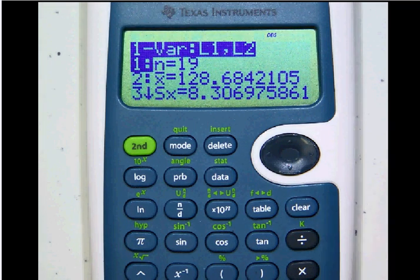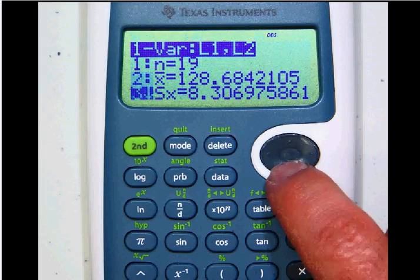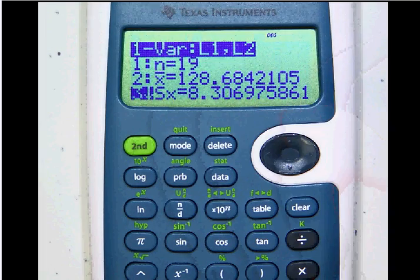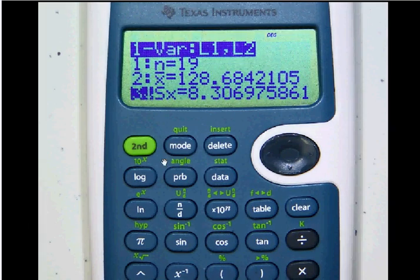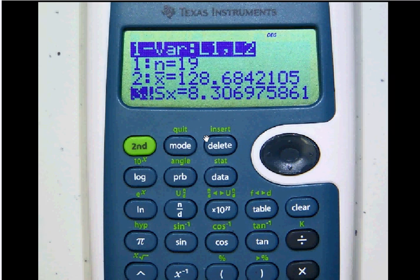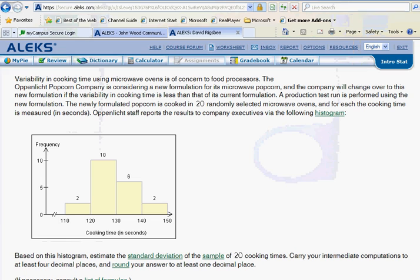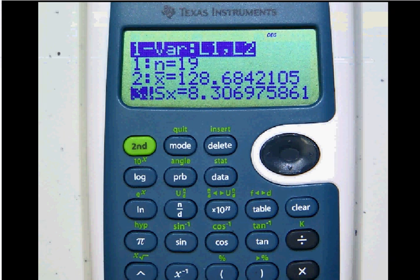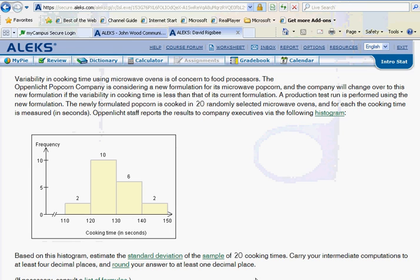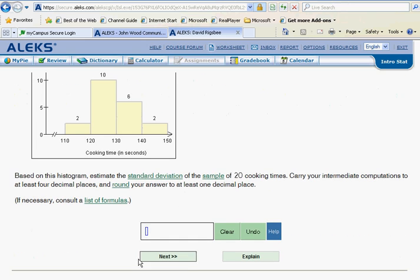Hit calculate and you're done. The answer that we want here is the SX answer, this 8.306. Now we want to go back to ALEKS and see what they want as far as decimal places. We want one decimal place, so 8.3 should do it. Let's go down here and enter the 8.3.